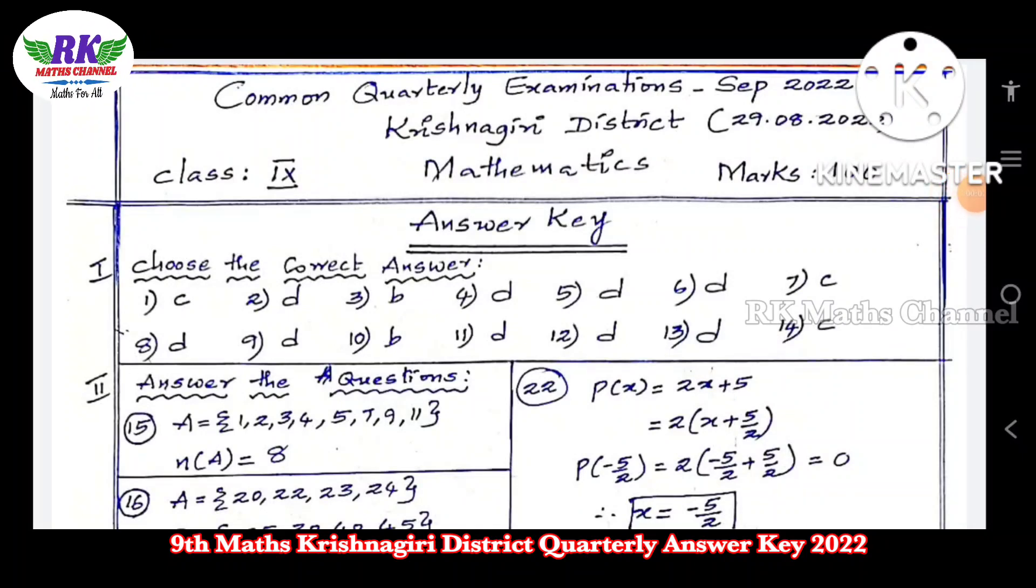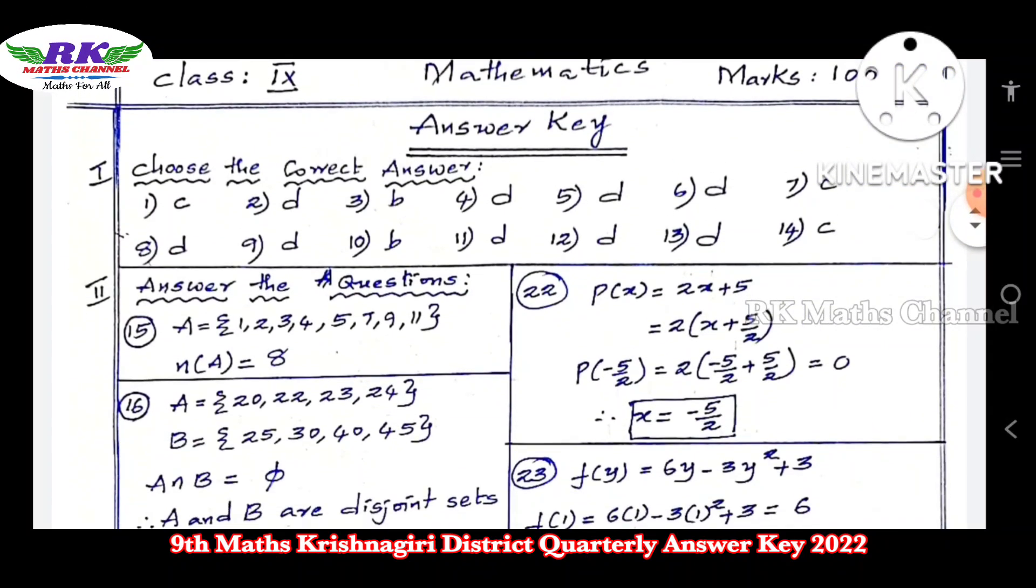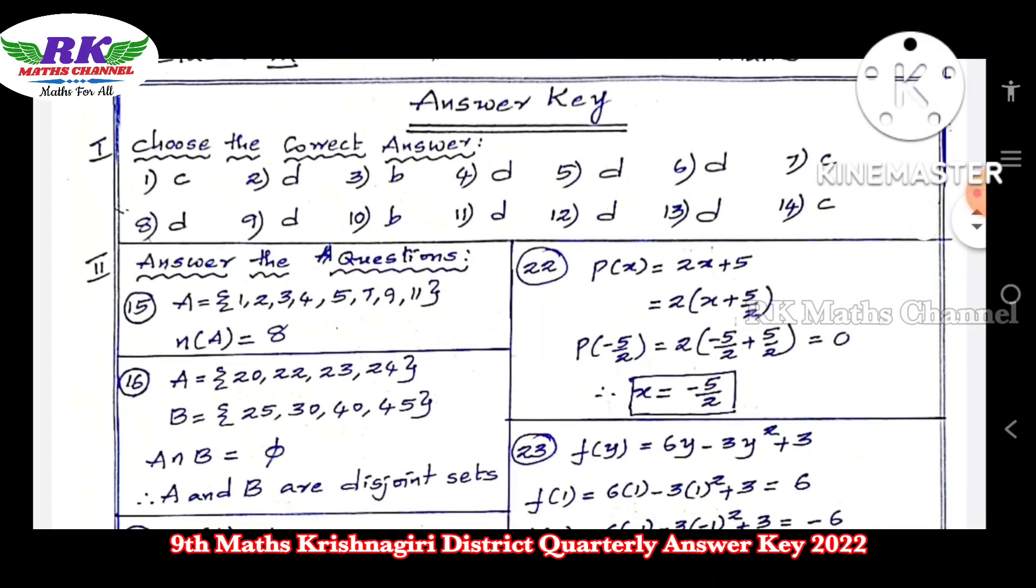Hi students, welcome to RK Maths Channel. In this video, we're looking at the ninth class mathematics quarterly examination question paper from September 2022, Krishna district. This is RK Maths' answer key. Total marks are 100. The complete answer key spans four pages.